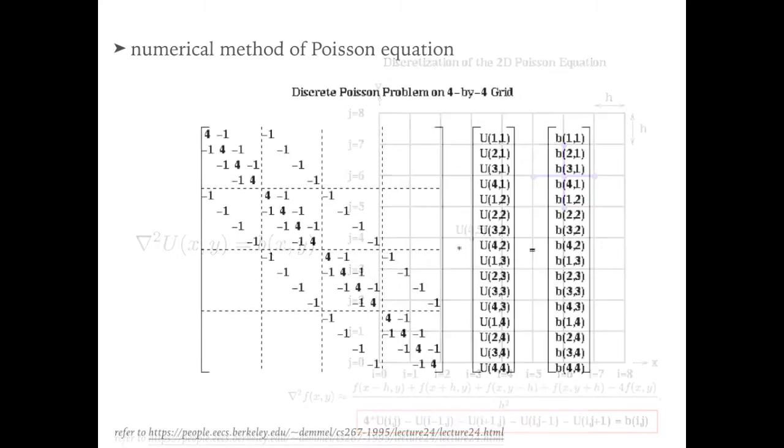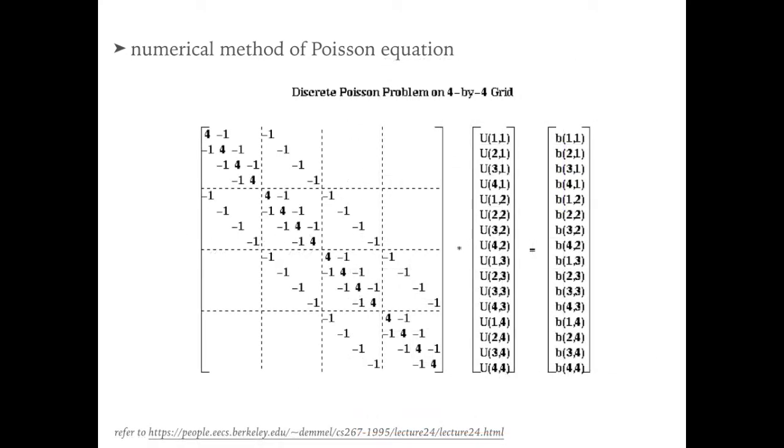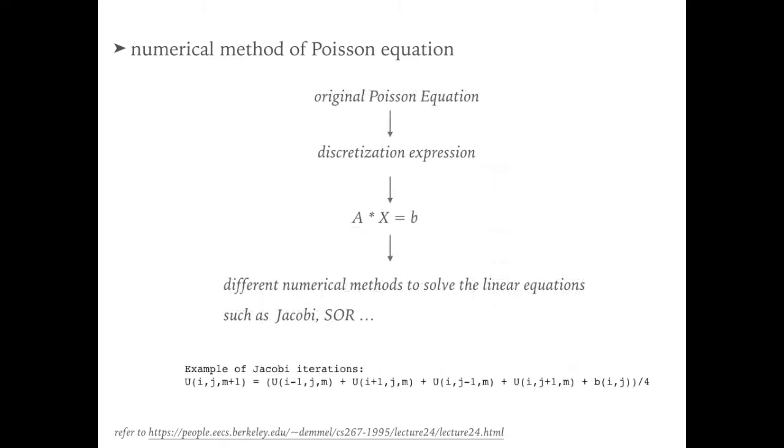This is a 4x4 grid mesh example. The discretization of the 2D Poisson equation becomes a form of linear equations. There are all kinds of numerical methods based on iteration to solve the linear equations. Therefore, the underlying problem behind the original Poisson equation is actually to solve a linear system of equations.